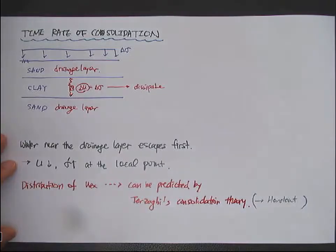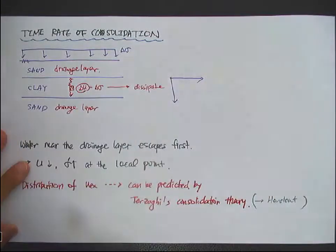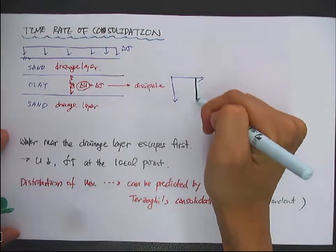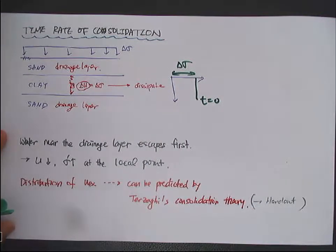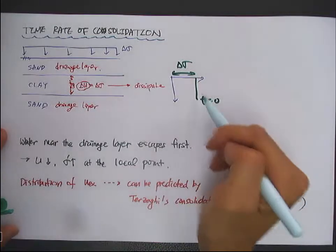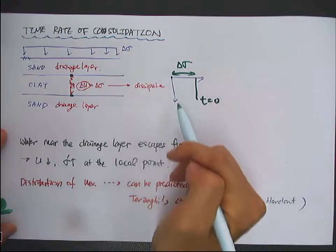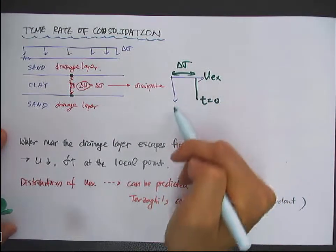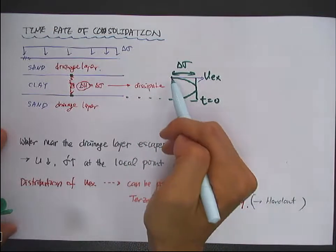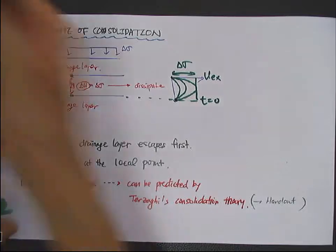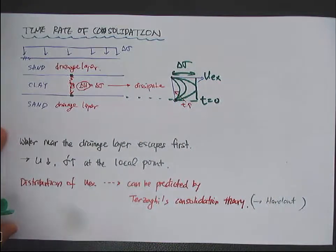If we look at the distribution of excess pore pressure across the clay layer: at time zero, excess pore pressure is generated equal to the total stress increment Delta Sigma. As time goes by, at the top — just next to the drainage layer — the excess pore pressure is zero. Similarly at the bottom, excess pore pressure is also zero. You get this kind of curve, and over time it decreases as the water escapes, so excess pore pressure decreases progressively.